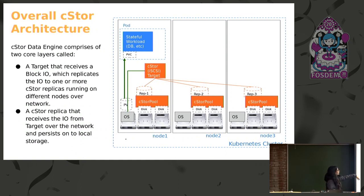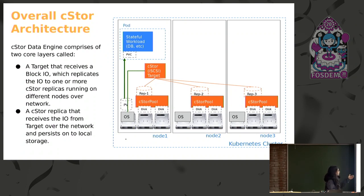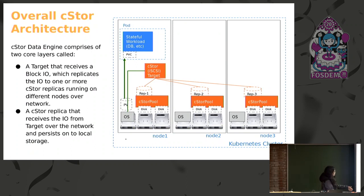The application writes on an iSCSI device on the node where it is running. An iSCSI client must be on that node so we can create an iSCSI device and communicate with the iSCSI target where the iSCSI server is running. The target receives block IO from the iSCSI client whenever the application writes anything on the device. The target's job is to replicate that block IO to the volume replicas on all nodes — the number depends on the replication factor needed. The CStore replica receives the IO and writes to the local storage, which is our block devices.